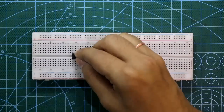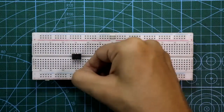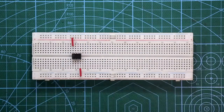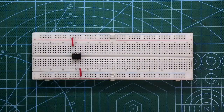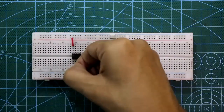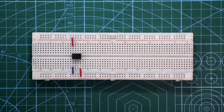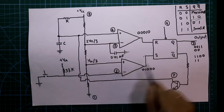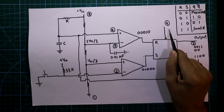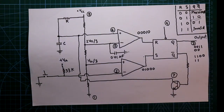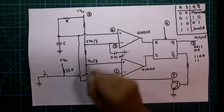555 IC pin number four and pin number eight are both connected to the positive VCC. Pin number one is connected to ground. Pin number eight and pin number four should be connected to positive VCC, and pin number one is connected to ground.